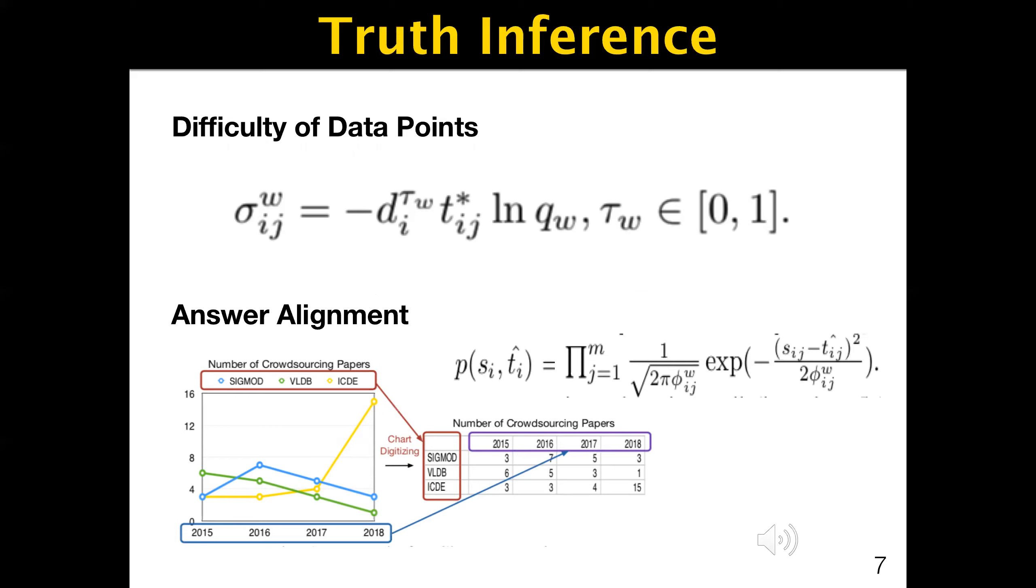Another factor is answer alignment, which is an important factor in quality control of chart extraction. For example, in that figure, a worker extracts three data points 5, 3, 4 in 2017 accurately, but she may align 4 to VLDB and 3 to ICDE, leading to alignment errors. Misalignment happens often when extracting data from charts because in many cases, the visual labels of data points in the chart cannot match the labels of the legend in the text region.